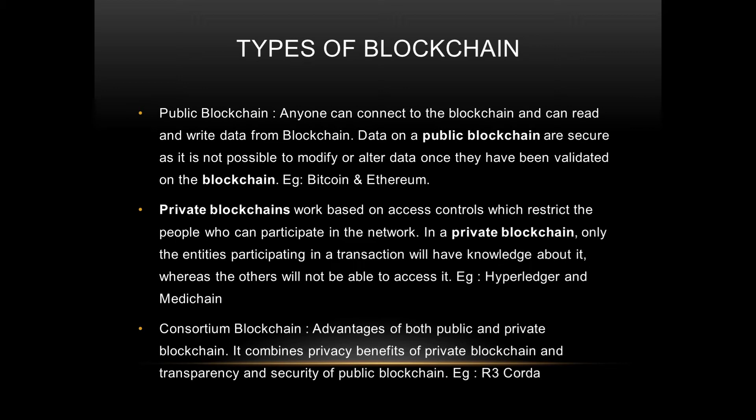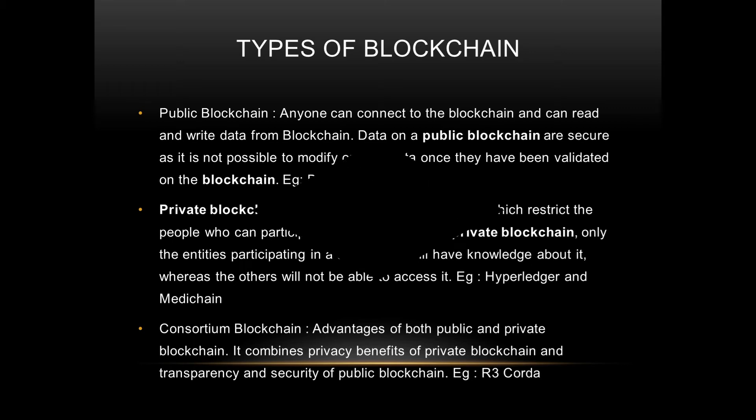It also incorporates the transparency and security of public blockchain — where anybody can read and write data, and trust is established through untrusted nodes. This covers the types of blockchain. An example of a consortium blockchain is R3 Corda.